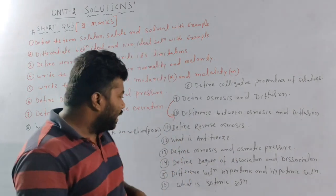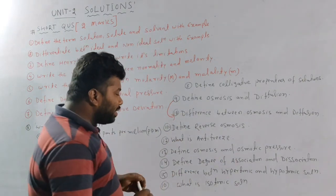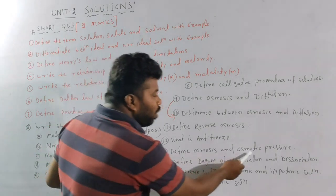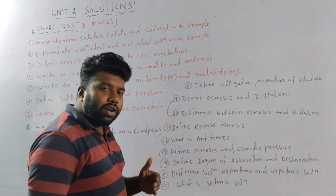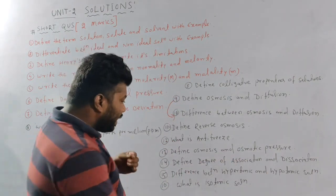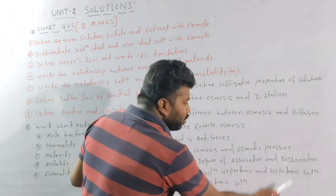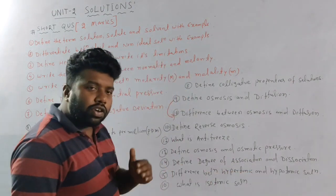What is antifreeze? Define osmosis and osmotic pressure — osmosis and osmotic pressure. Next: define degree of association and degree of dissociation.